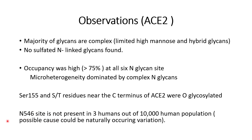One more finding came from a clinical study of 10,000 humans: the N-glycan site at position 546 was not present in 3 out of 10,000 people in the study population. They think this could be due to naturally occurring variation.